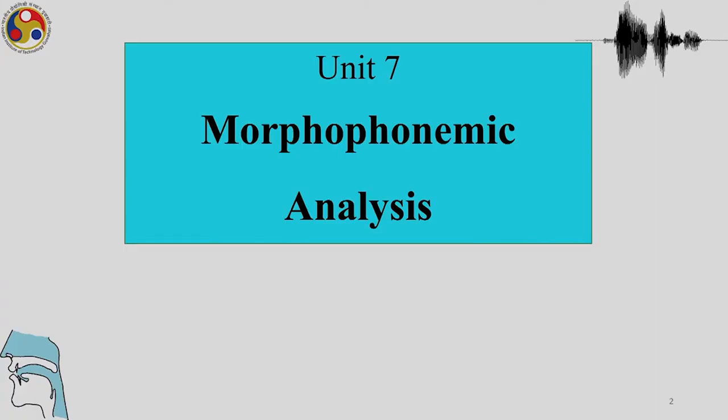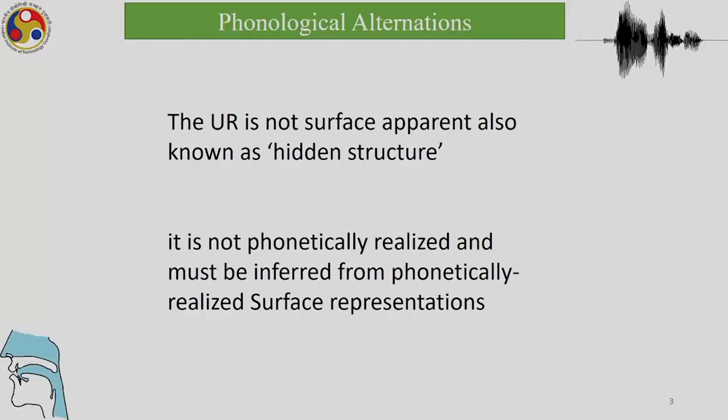We are continuing with Unit 7, where we have talked about phonological alternations, about finding underlying representations, and about ordered rules. In this section we will continue with those discussions and not just talk about phonetic alternations and phonemic alternations, but also look at what happens when there is a lot of morphological complexity in the data.